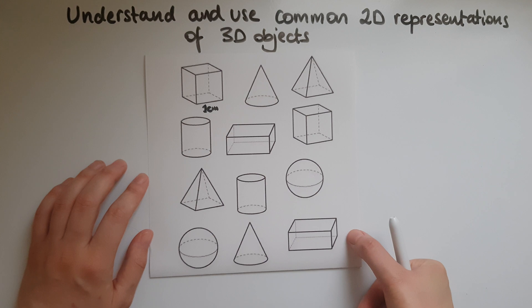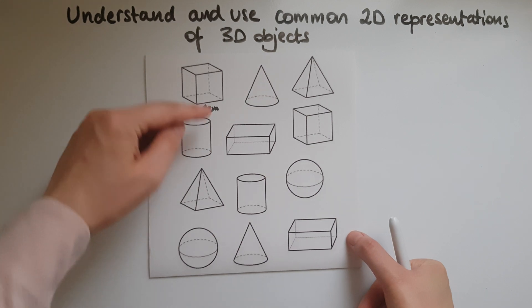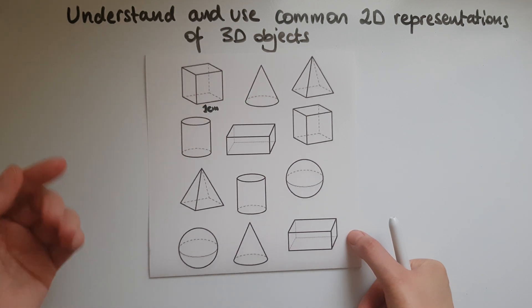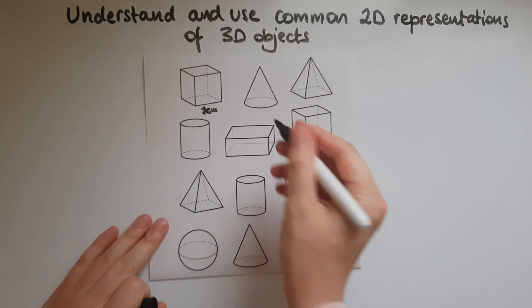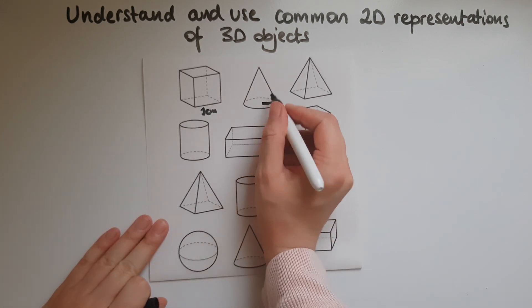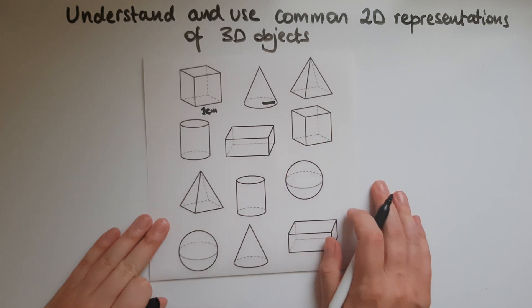Or we can work out the surface area because we know there are six faces in here and each and every one of them is one centimetre squared. So that must be six centimetre squared overall. And the same thing, if we're given the radius we should be able to work out the volume of the cone.